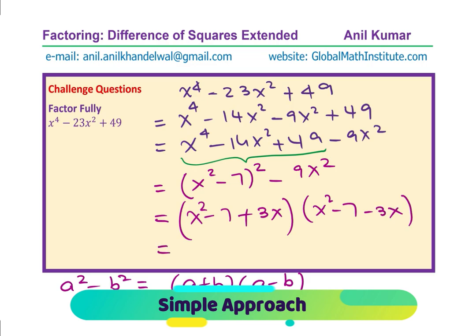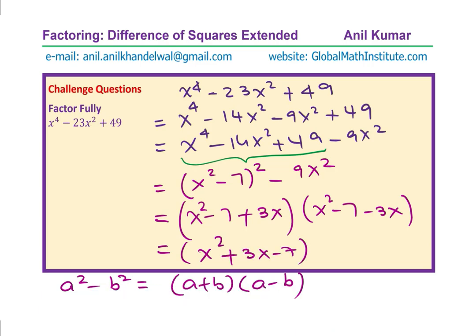So we are going to write this as x square minus 7 plus 3 x times x square minus 7 minus 3 x. You can always rearrange once again and write it as x square plus 3 x minus 7 times x square minus 3 x minus 7 and that gives you the factored form. You get the idea.